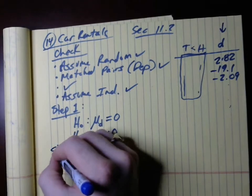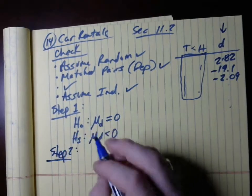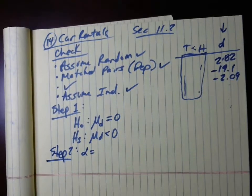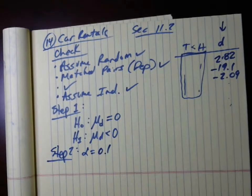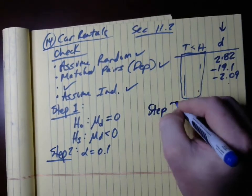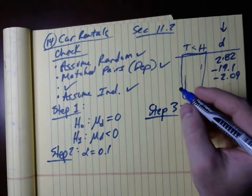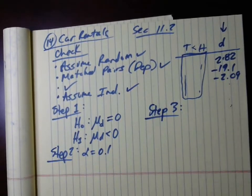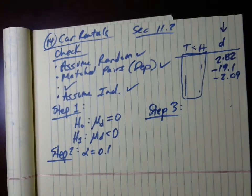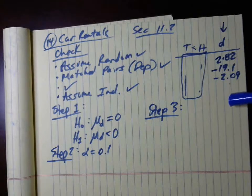Step two is given to you — that's your alpha equals 0.1. Then we do the test statistic, step three. We don't know the population standard deviation — similar to doing the mean from chapter 10 hypothesis test — we can only calculate the sample standard deviation of these differences. We denote this S sub d, and so we end up having a T distribution because we don't know sigma, the population standard deviation of the differences.